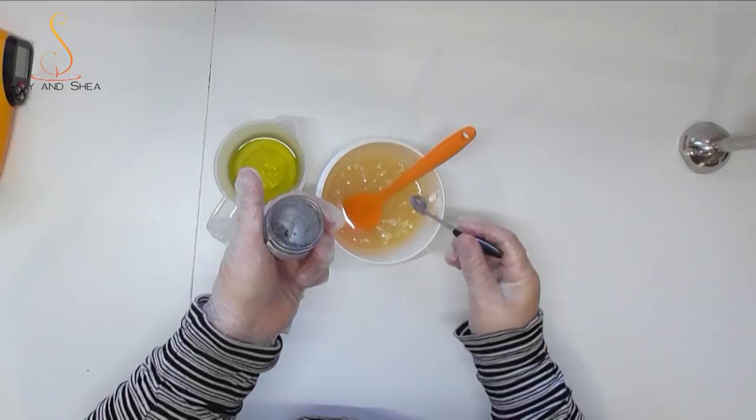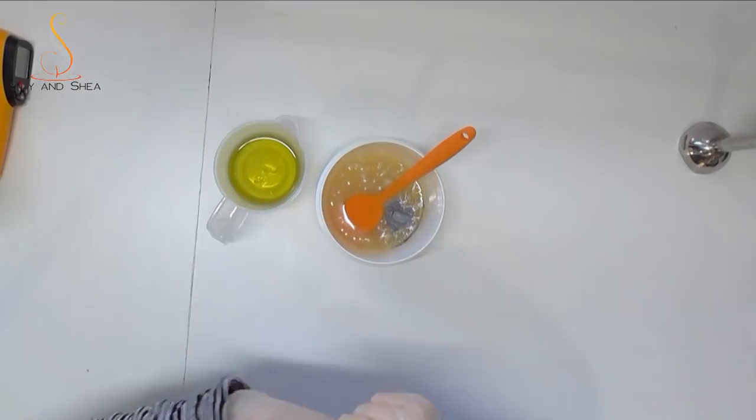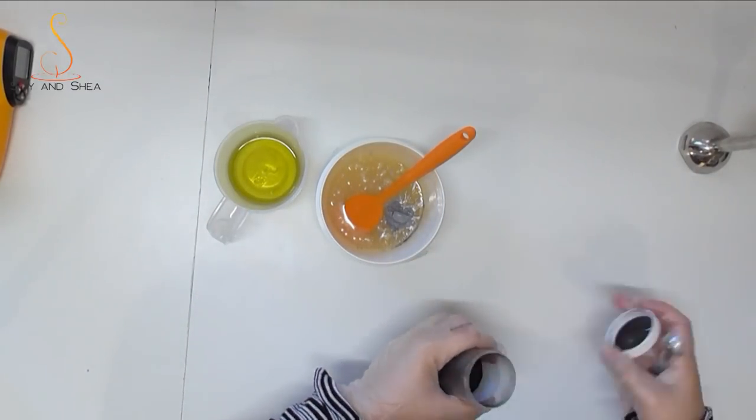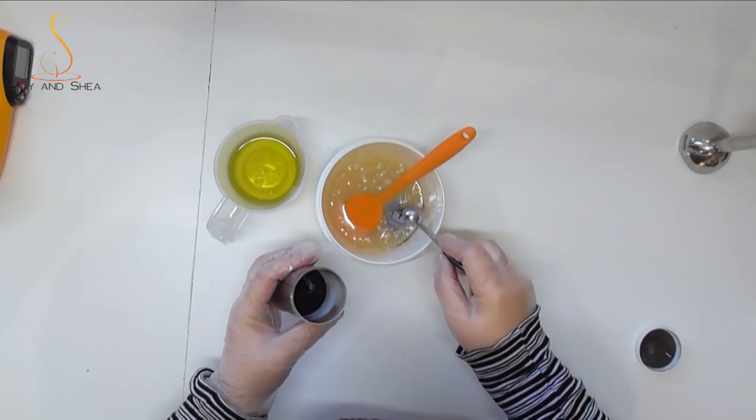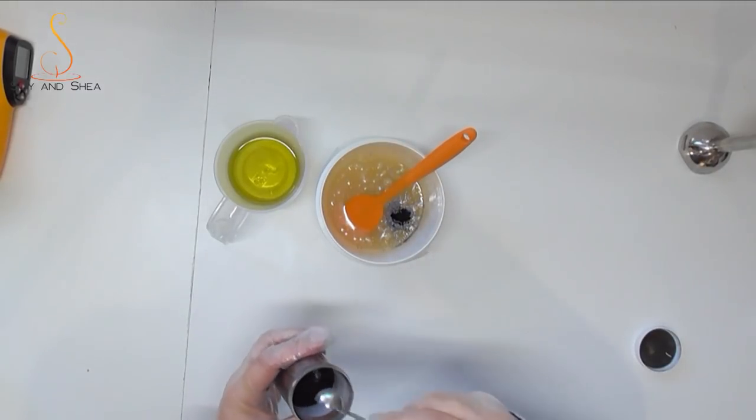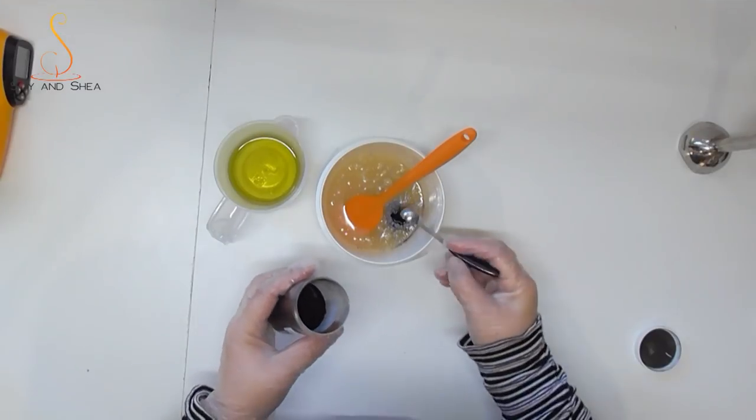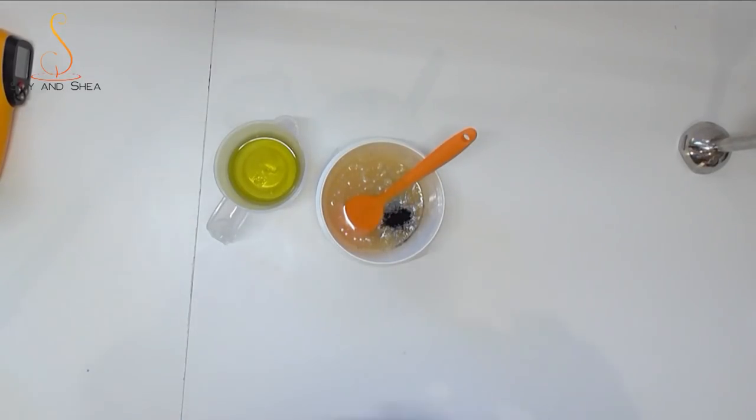Before I pour them in, I am also going to add in my mica because I want this all as one color, and this is Silver Lakes mica from My Mica Obsession. I'm also going to add in just a tiny bit of activated charcoal because I want that to be quite a dark gray, and I don't have a really dark gray on my little shelf of micas.